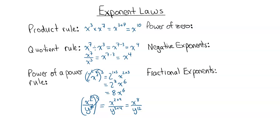What about the power of zero? Anything to the power of zero is equal to one. I could have X to the power of three, Y to the power of two, and Z all to the power of zero — it's still going to be equal to one. Any entire thing to the power of zero is one. The reason is that if we take all these exponents and multiply them by zero, three times zero is zero, two times zero is zero, one times zero is zero. So it's essentially one times one times one, and that's how you get just one.